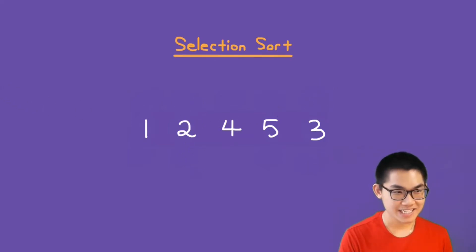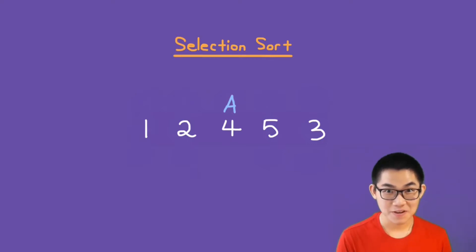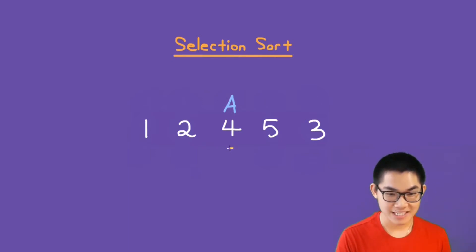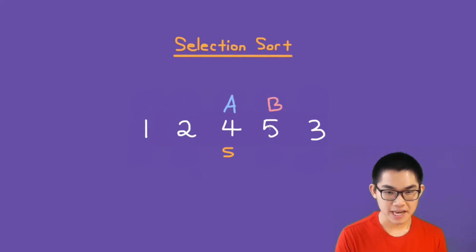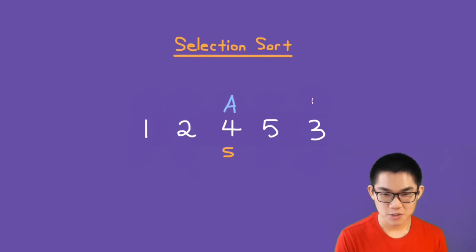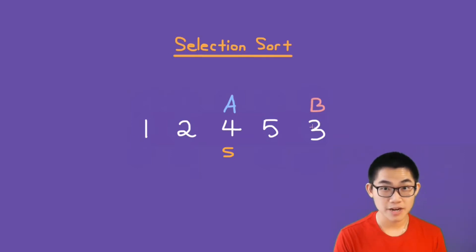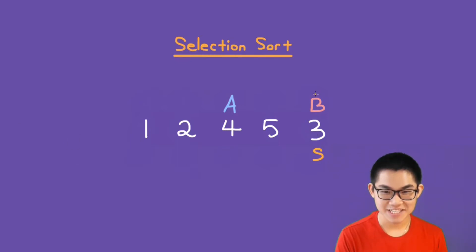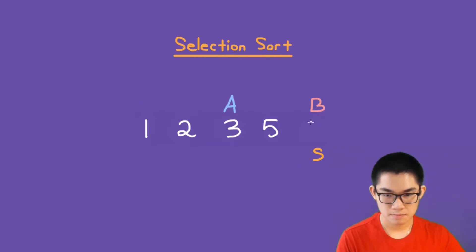We start over and put A on the third element. A says to B, find me the smallest number in this array. B assumes this is the smallest number. B looks at 5 and says, is 5 smaller than 4? No. Is 3 smaller than 4? Yes. B assumes 3 is the smallest element. Since B is at the end of the array, we make the swap. Now 3 is in its correct position.